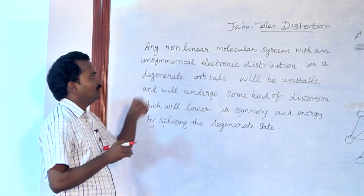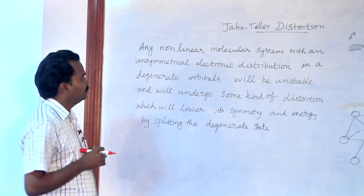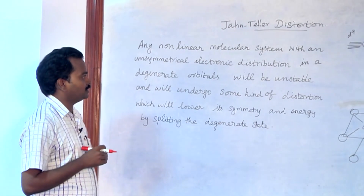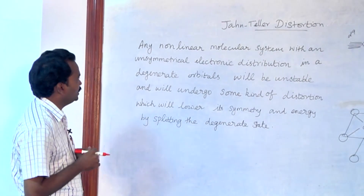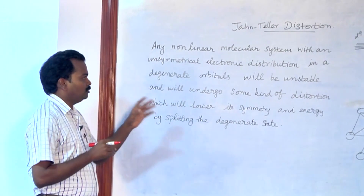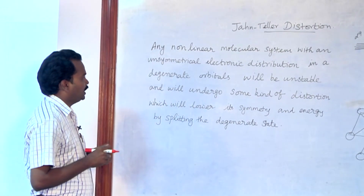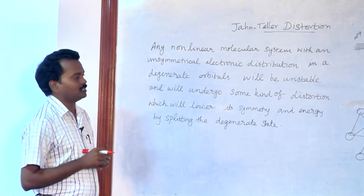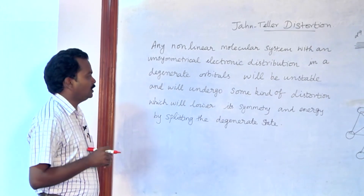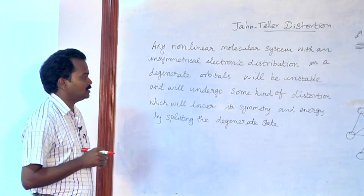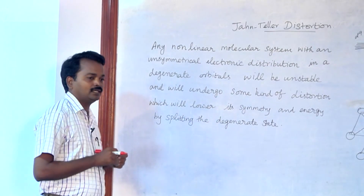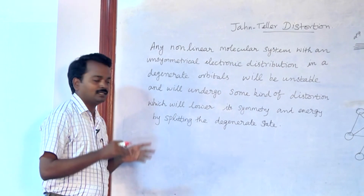Any non-linear molecular system with an unsymmetrical electronic distribution in degenerate orbitals will be unstable and therefore will undergo some kind of distortion, which will lower its symmetry and energy by splitting the degenerate state.